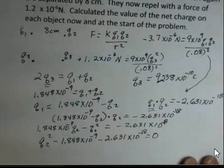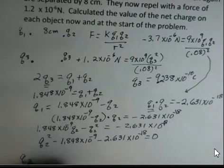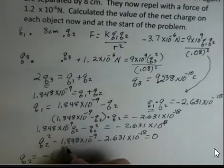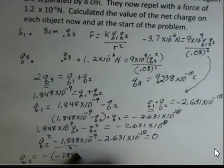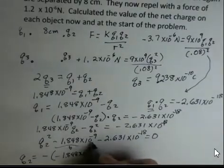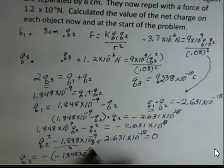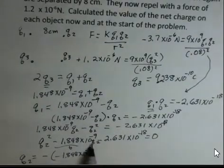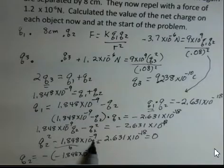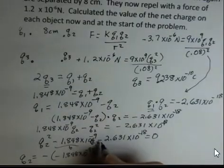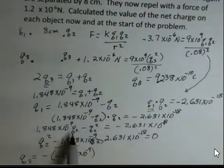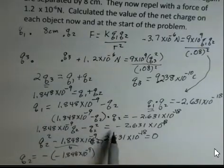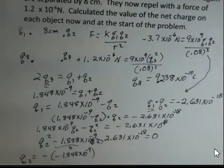We have the variable, the unknown, Q2 squared. And I'm going to rewrite this in standard form for quadratic equations. I prefer a positive in front of the squared variable. So I'm going to add Q2 squared to both sides. I'm going to subtract 1.848 times 10 to the minus 9 Q2 from both sides. And we'll achieve this expression. It is very important to keep track of the plus and minus signs on these numbers. I've dropped a lot of things. There's Q2 here.